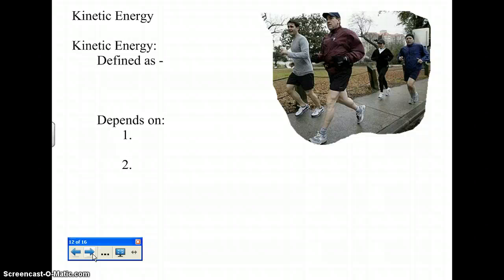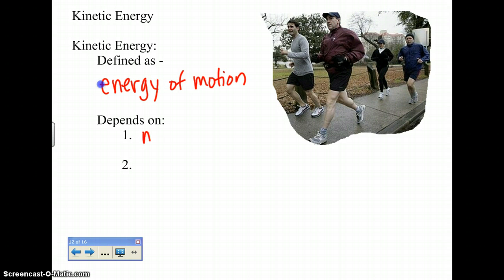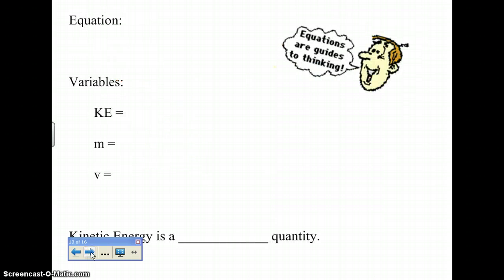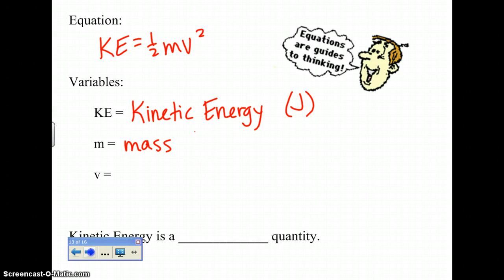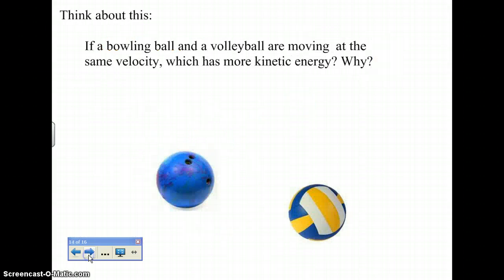So moving on to kinetic energy, it's defined as energy of motion. And with this energy of motion, it's going to be dependent upon the mass of the object as well as the velocity of the object. Mass of the object as well as the velocity of the object. So therefore, we can assume that in the equation, you're going to have to have mass and velocity. Whereas the equation is KE equals 1/2 mv squared. KE stands for kinetic energy. And the ability to do work is to have energy. So it's measured in joules as well. Your m is your mass, which is measured in kilograms. And your v is your velocity, which is measured in meters per second. So a kilogram times a meter per second is what a joule is equivalent to. Your kinetic energy is considered to be a scalar quantity as well, showing magnitude only.